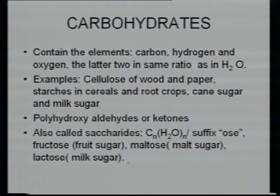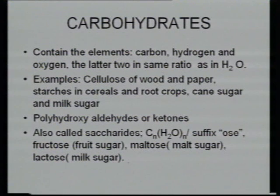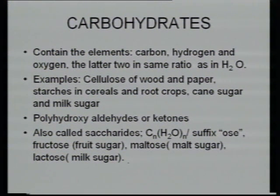Now we will take the constituents one by one. The major constituent is carbohydrate. Chemically, it consists of carbon, hydrogen, and oxygen, and the ratio of hydrogen to oxygen is the same as in water. A simple example is glucose. Other examples include starches in cereals, cane sugar, and milk sugar. Cellulose of wood and paper is also an example of carbohydrate. Technically, they are known as polyhydroxy aldehydes or ketones — they could be aldehydes or ketones.